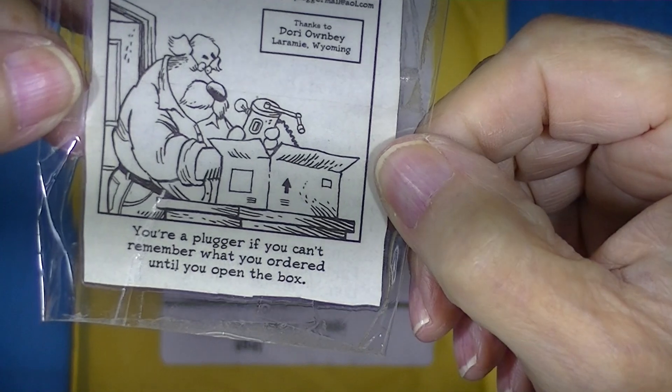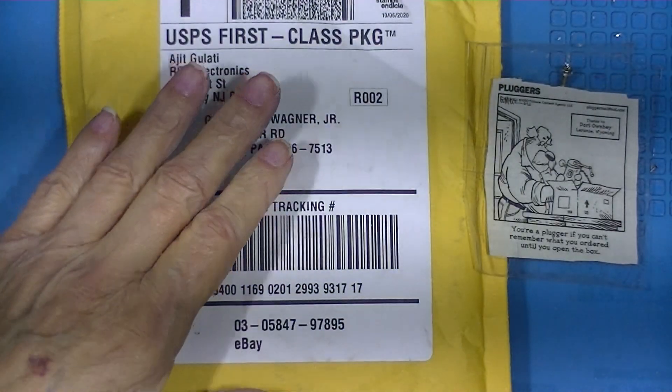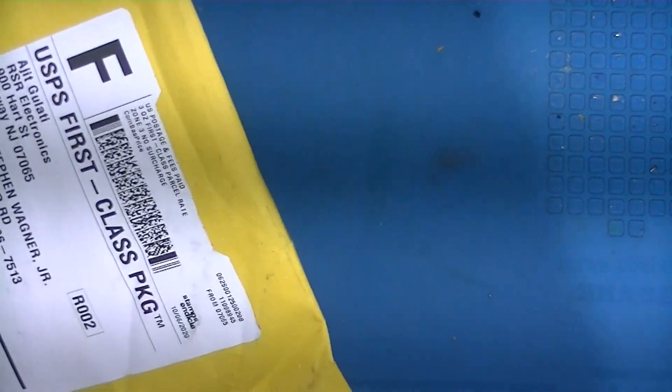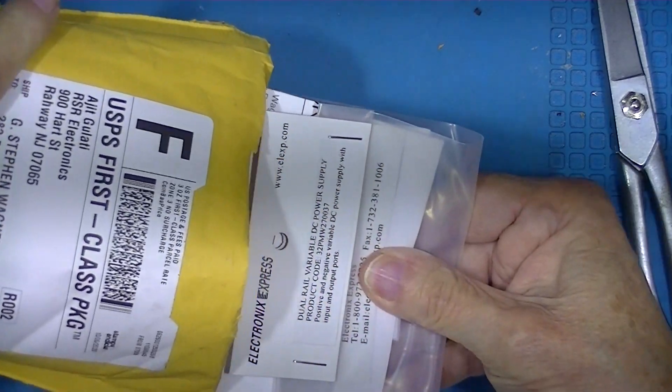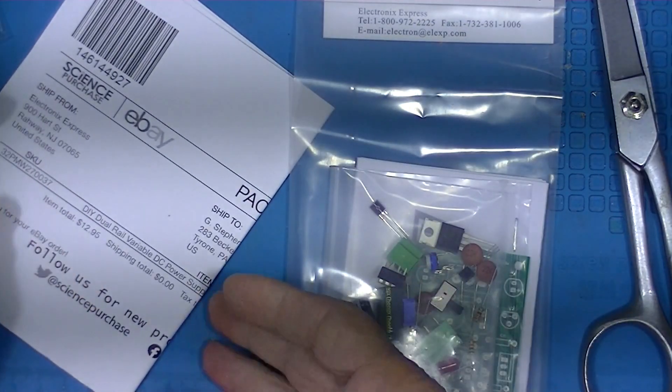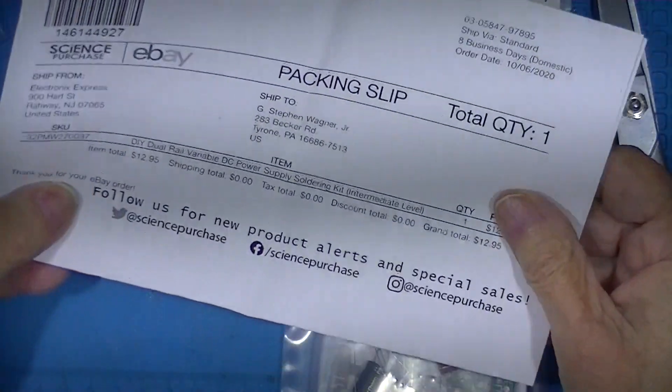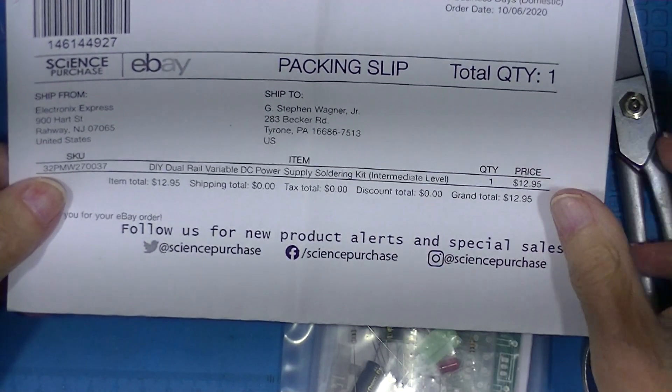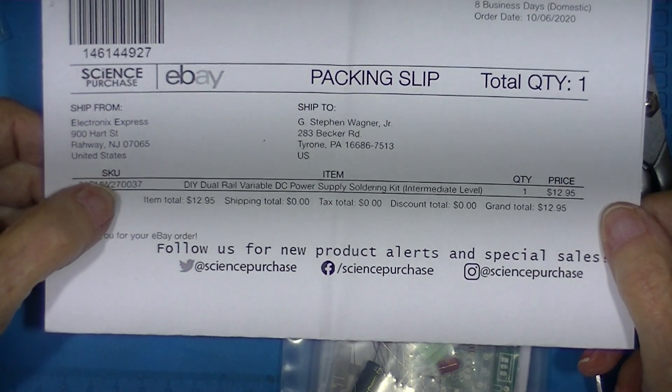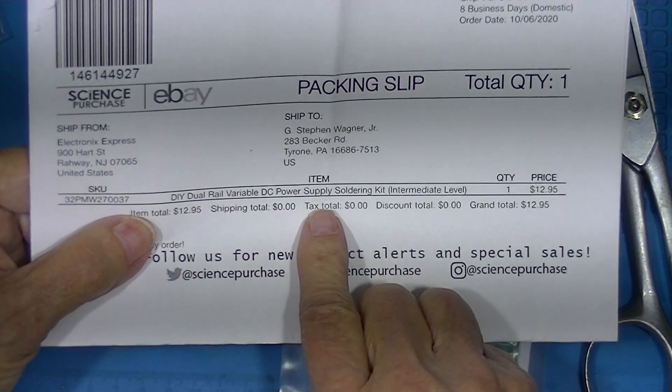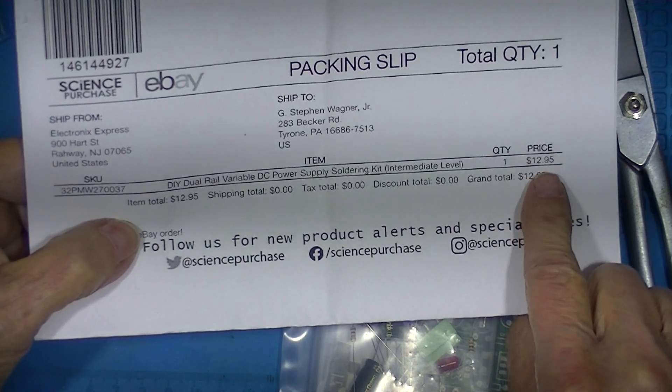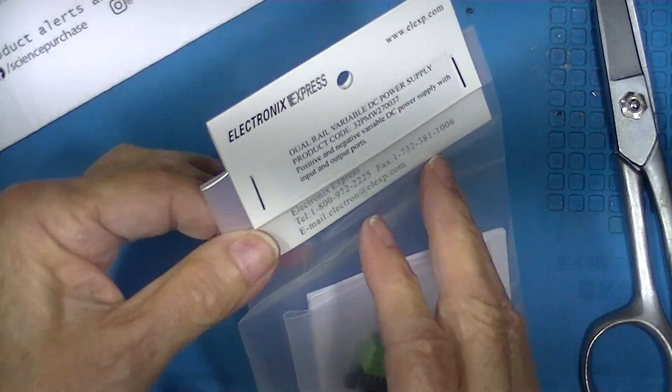Well, here we are once again. I have no clue. This is from Electronics Express. It's a dual rail power supply, a soldering kit. And delivered was $12.95.